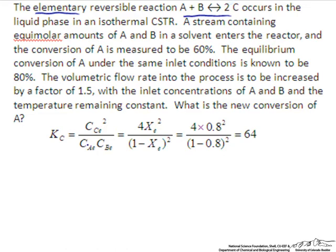We can express this in terms of conversion: for every mole of A converted we convert 1 mole of B, and we produce 2 moles of C. We plug in 1 minus x squared in the denominator and 4x squared for C. The equilibrium conversion is 80%, so plugging in 0.8 for x allows us to solve for the equilibrium constant as being equal to 64.